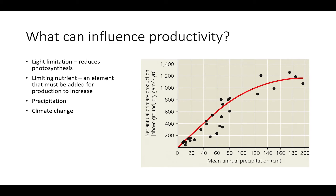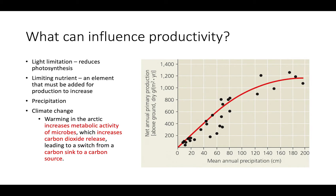Climate change can also influence productivity. For example, warming in the Arctic is going to increase the metabolic activity of microbes, which increases the carbon dioxide they release during respiration. This eventually leads to a switch from a carbon sink to a carbon source.